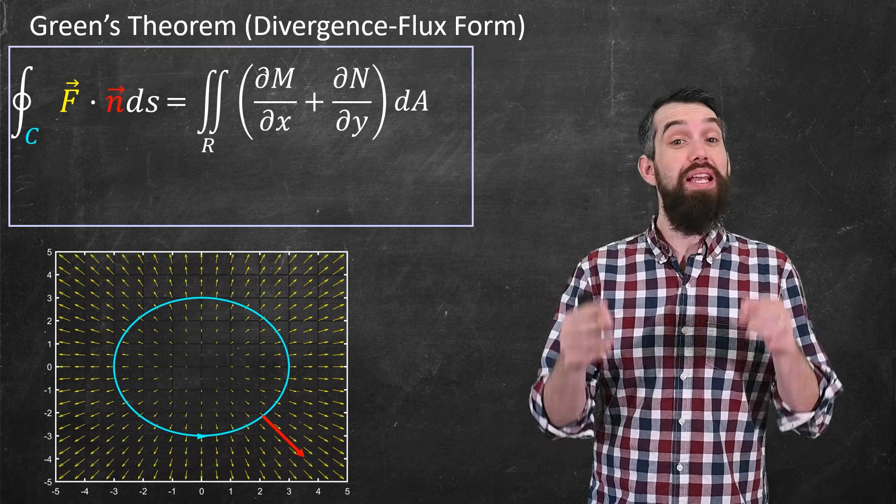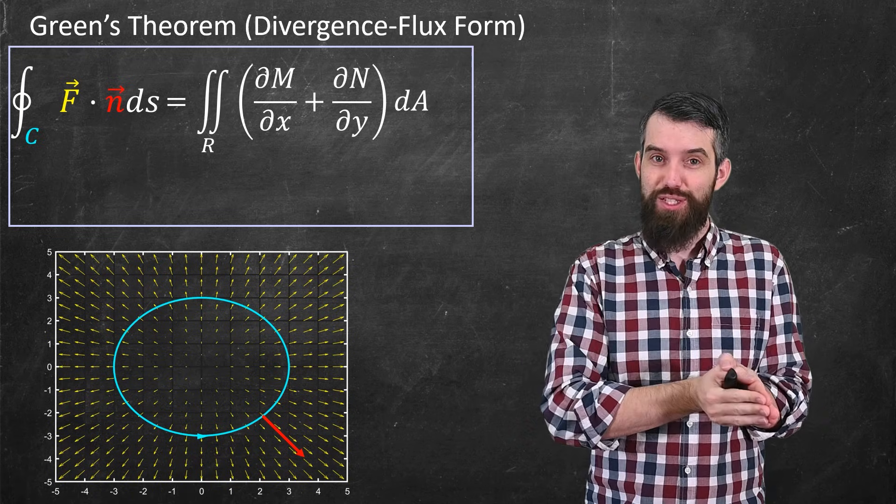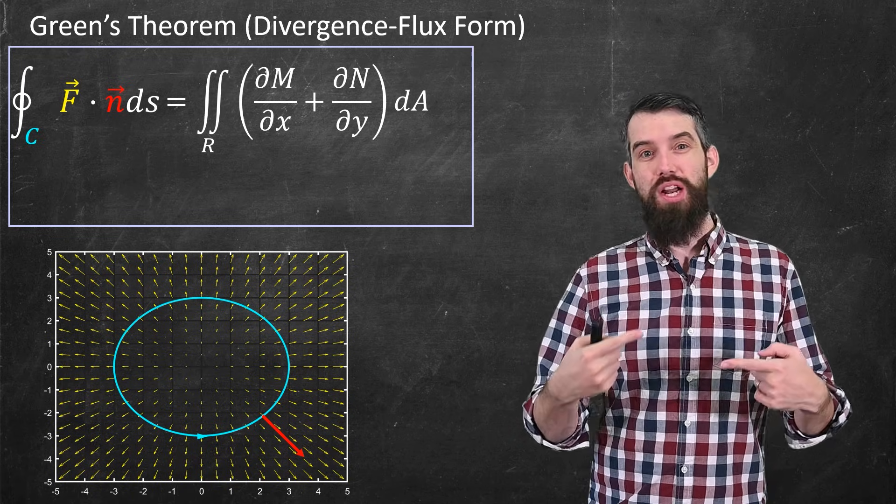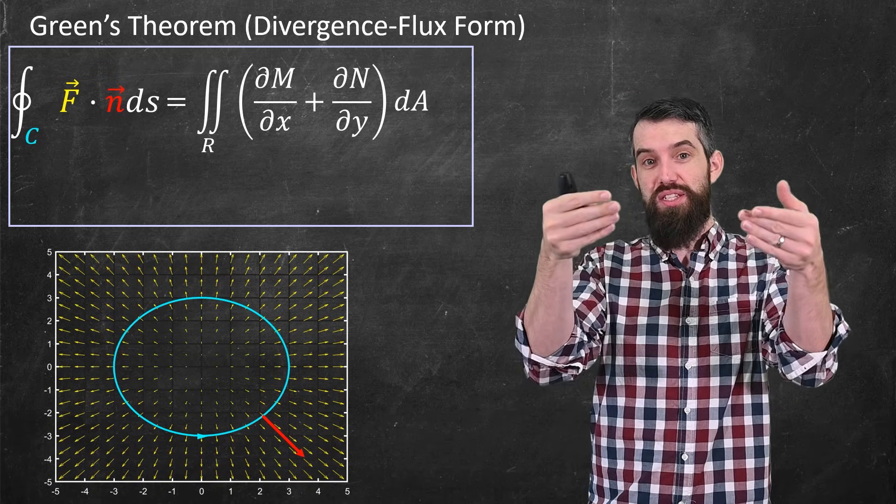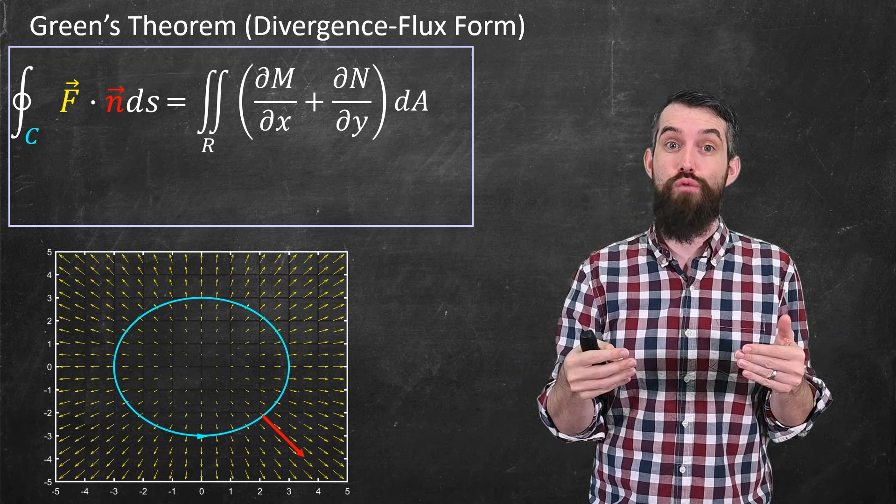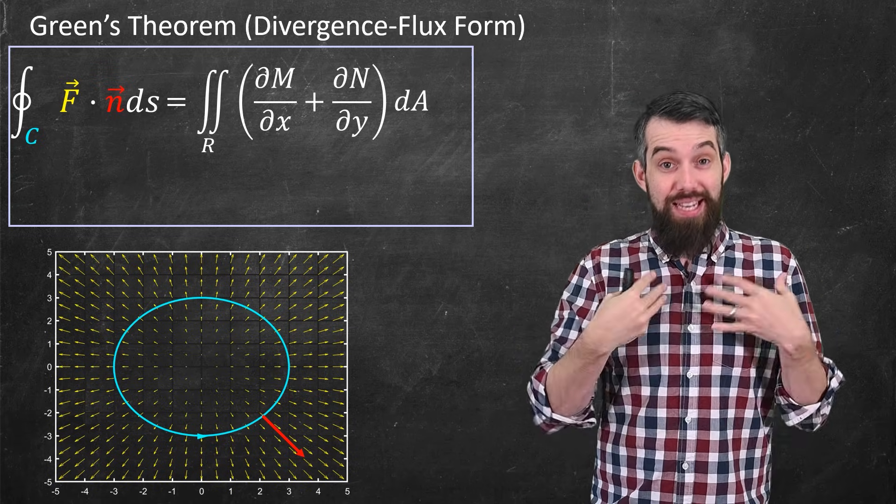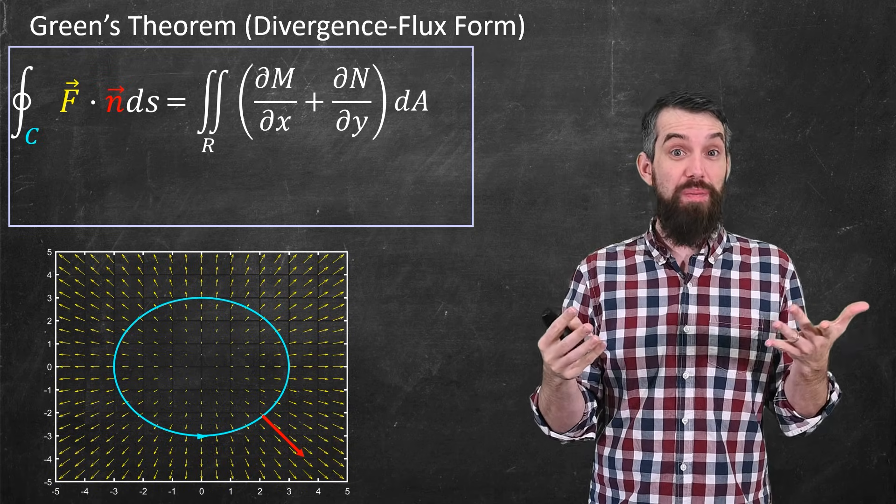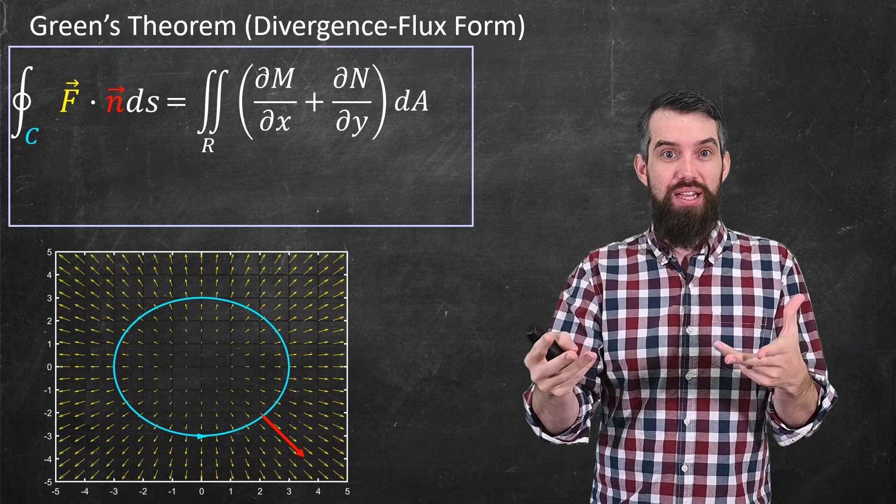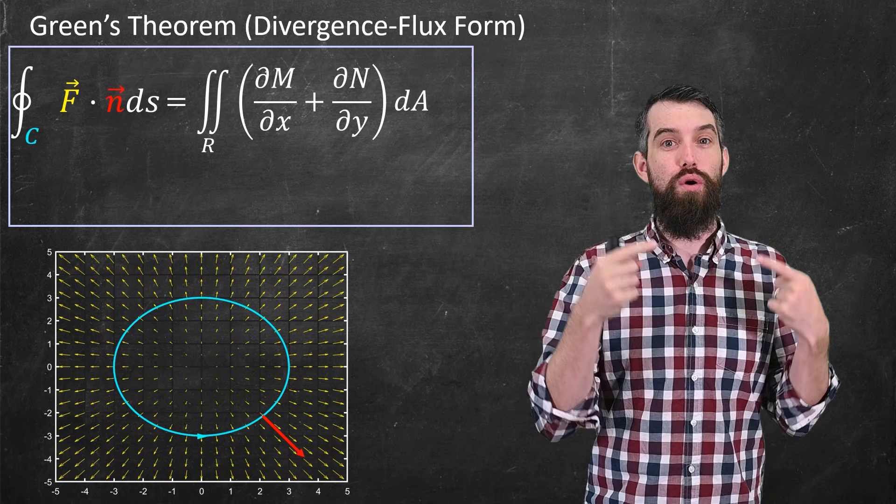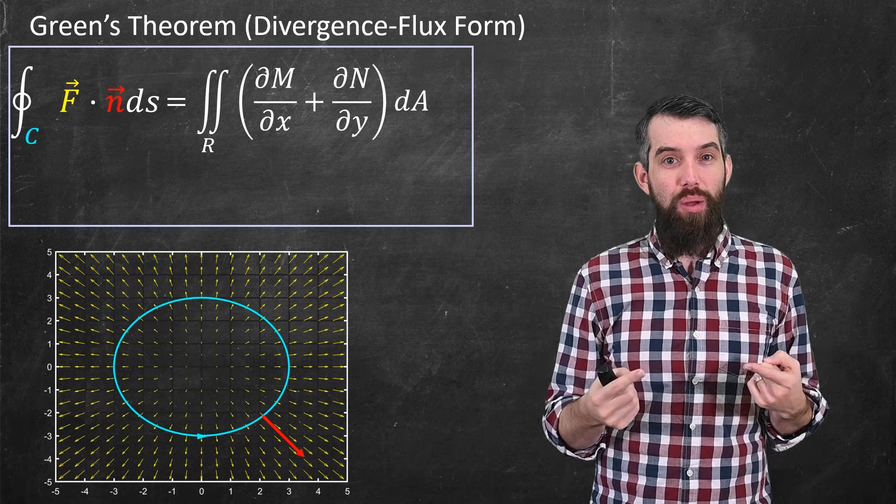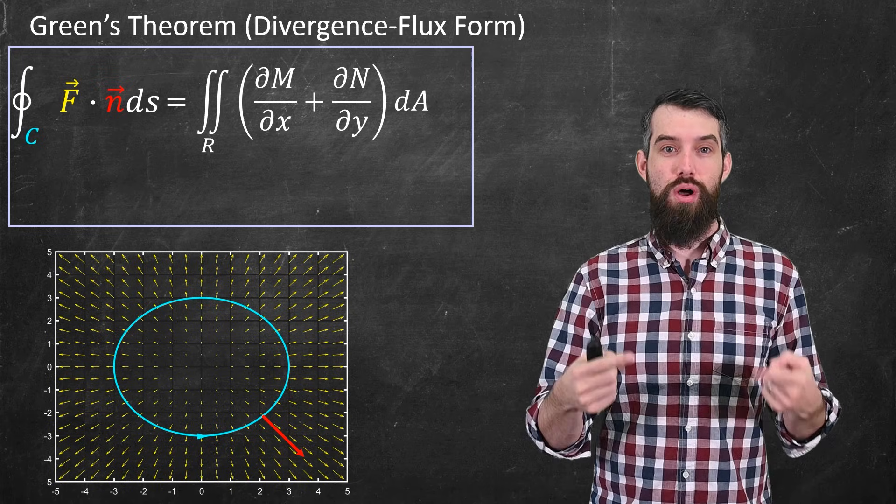Now, let's go back and review Green's theorem in its divergence or flux form. When we previously talked about Stokes' theorem, we saw that Stokes' theorem was a generalization of one half of Green's theorem. Today, in this video, the divergence theorem is going to be the generalization of the other half of Green's theorem.